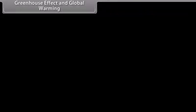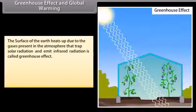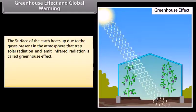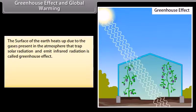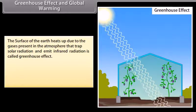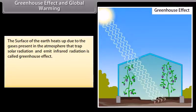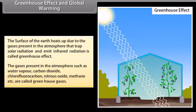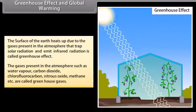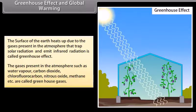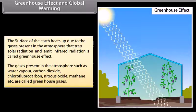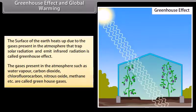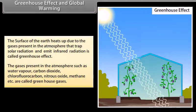The surface of the Earth heats up due to the gases present in the atmosphere that trap solar radiation and emit infrared radiation — this is called the greenhouse effect. The gases present in the atmosphere such as water vapour, carbon dioxide, chlorofluorocarbons (CFCs), nitrous oxide, methane, etc. are called greenhouse gases.